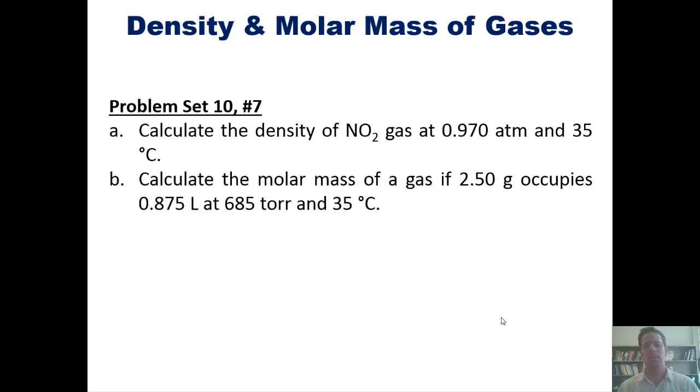Let's take a look at a problem. Calculate the density of NO2 gas at 0.97 atmospheres and 35 degrees Celsius. And calculate the molar mass of a gas if 2.5 grams of it occupies 0.875 liters at 685 torr and 35°C. I'm not doing this problem here, but you can click this link to watch this solution if you like. All right, let's move on.